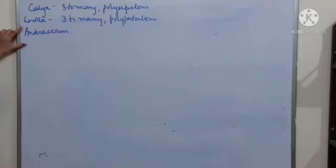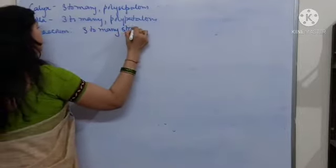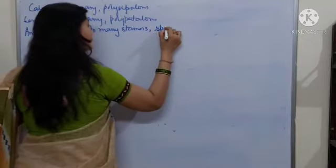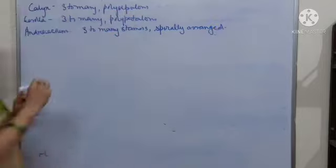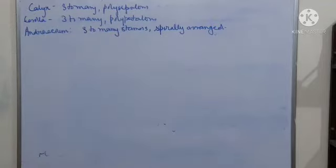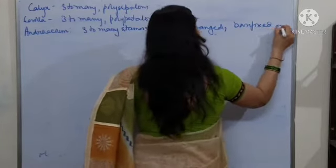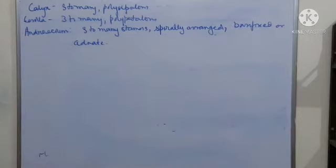Androecium: as we know, the androecium represents the male sexual part of a flower. There are 3 to many stamens present, which are generally spirally arranged. They are basifixed or they may be adnate.